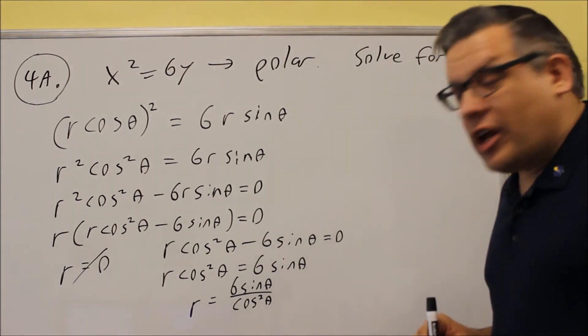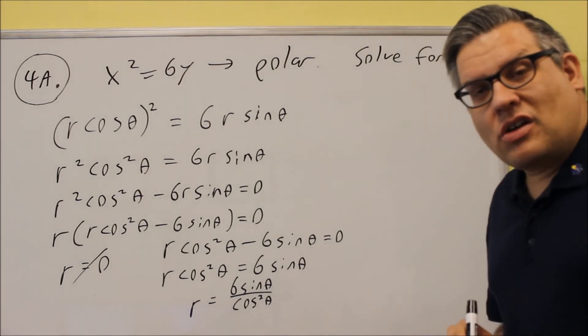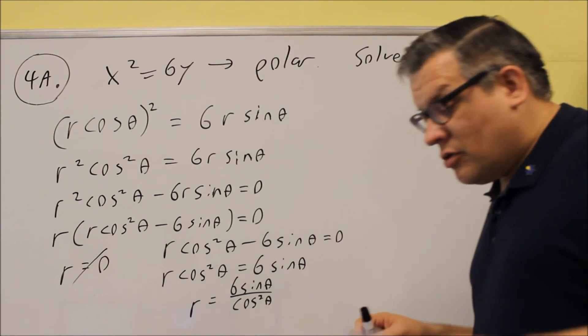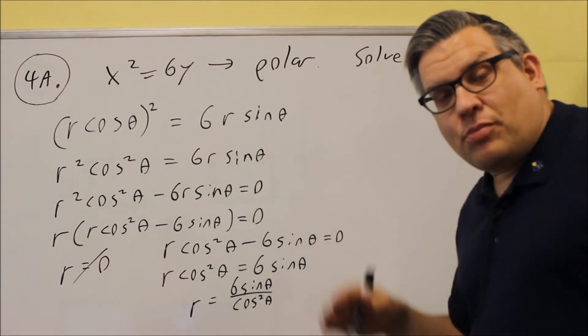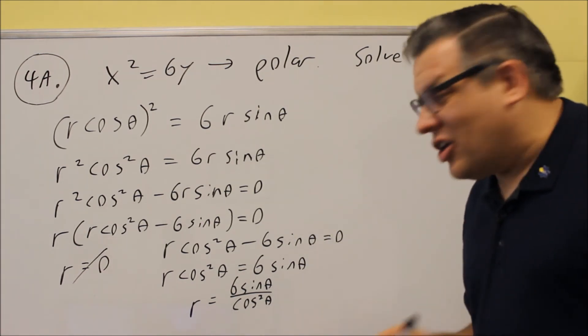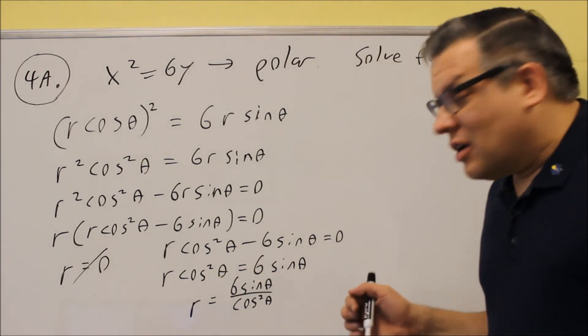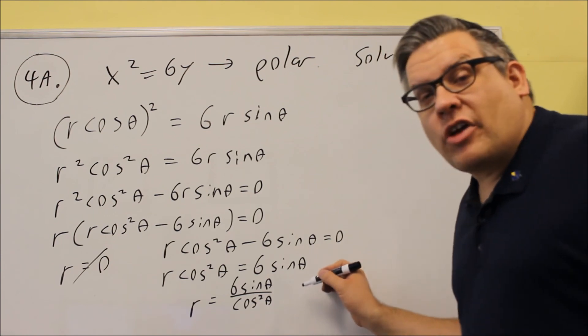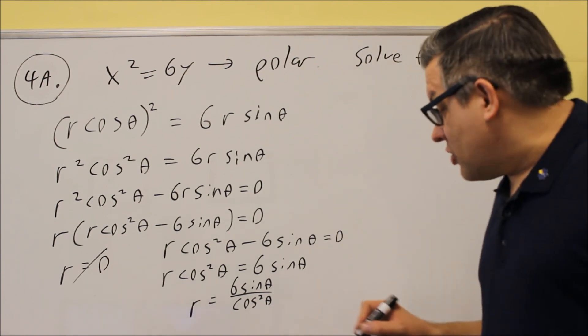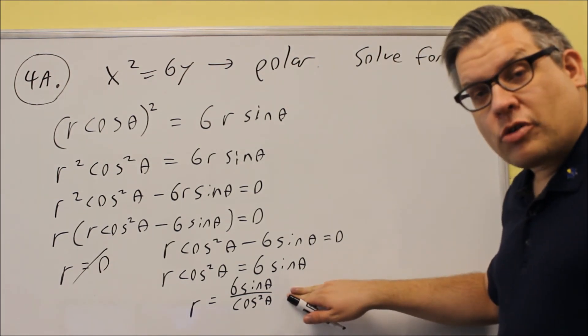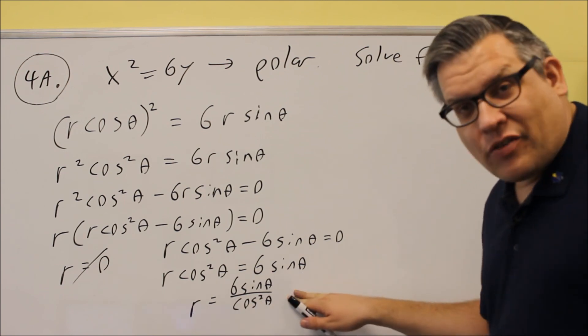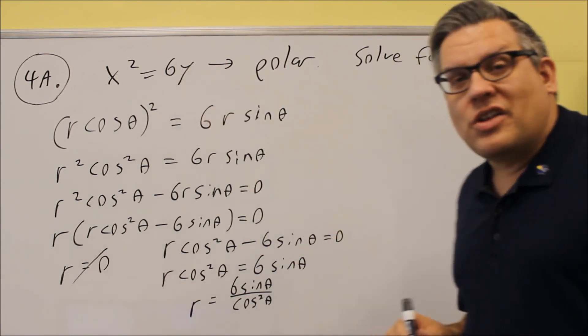Now it's okay to leave your answer just like this. You could use identities to further simplify that, and I did put that as an alternative answer in the key, but it's not necessary for you to use identities for this. It's fine to leave your answer in terms of sines and cosines. This would be considered polar because we just have R's and thetas left over. We've gotten rid of the X and the Y.